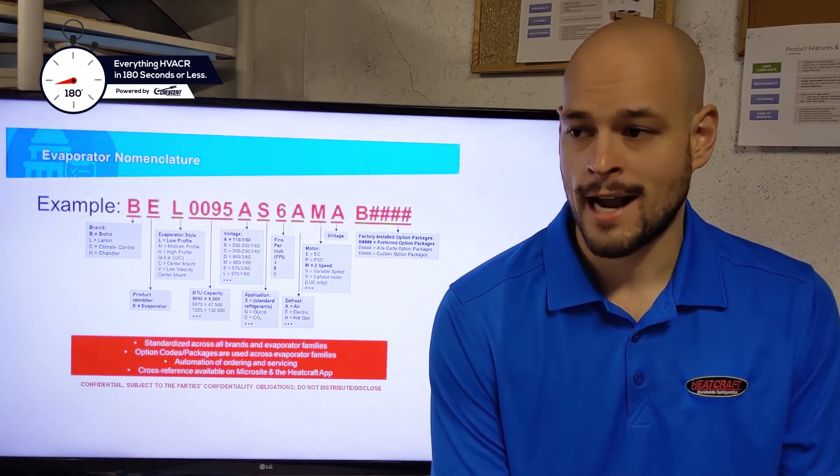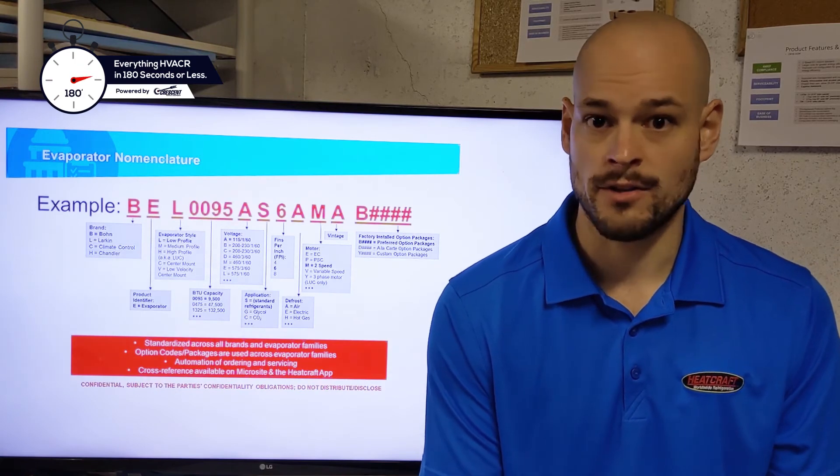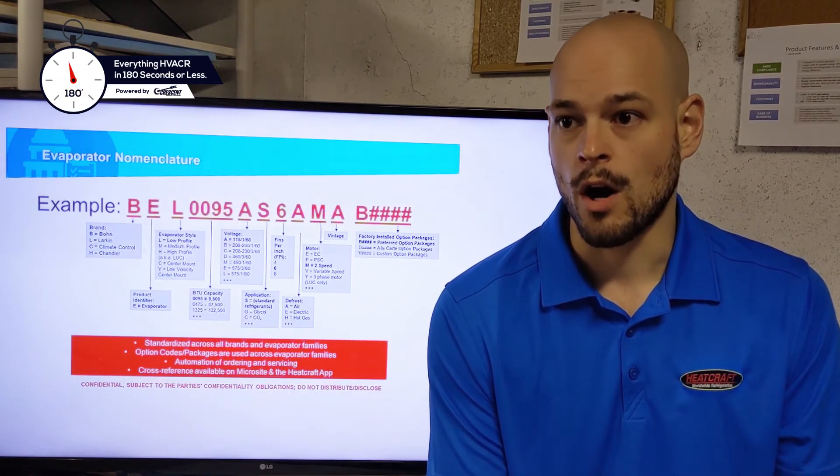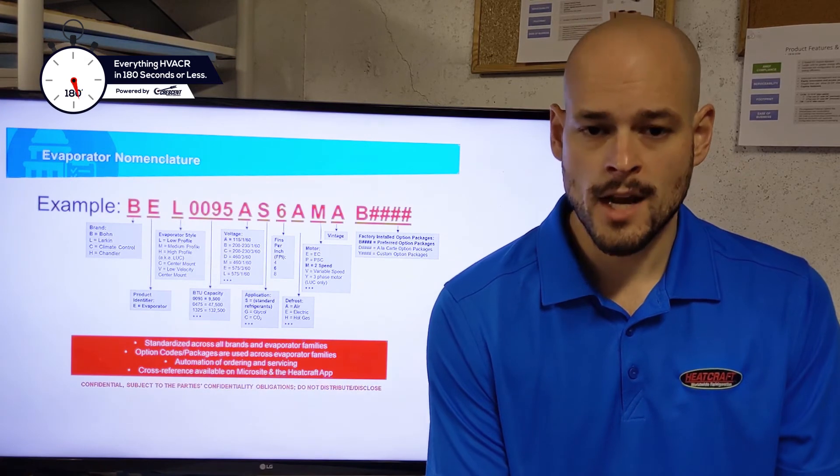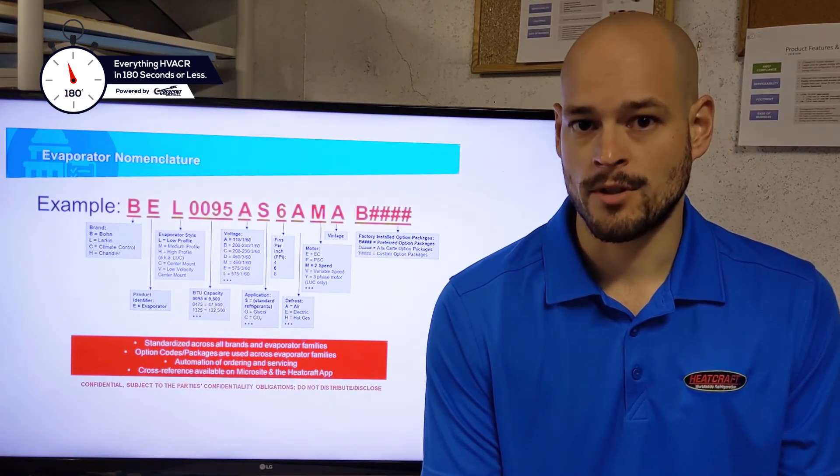that's going to be the factory mounted user interface. All the sensors and the EEV, that's going to be a B0200 for 448 and 404. So you're going to have a unique option code for any option package you're going to pick.